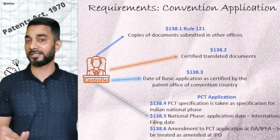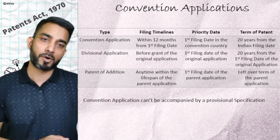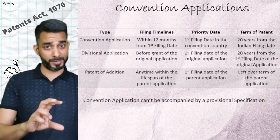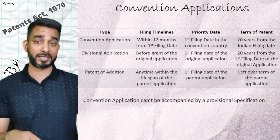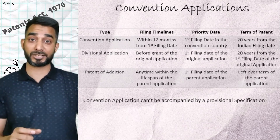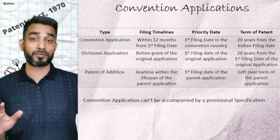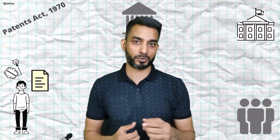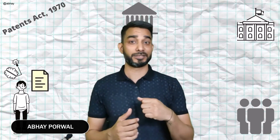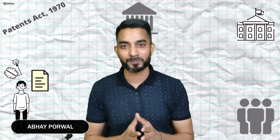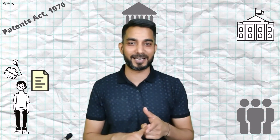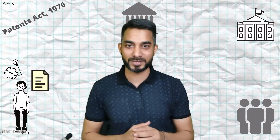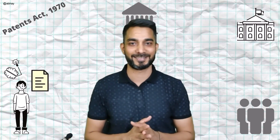Here are a few interesting points about convention applications: filing timelines, priority date, term of patents, division applications, and patents of addition can all arise from a convention application. Remember, convention applications must be accompanied by a complete specification — no provisional application. This brings us to the end of this episode. In the next episode we will discuss PCT applications, national phase applications, the ISAs, the IPEAs, filing deadlines, and specific requirements. Stay tuned — that video will be out in the next few days. Take care, bye-bye.